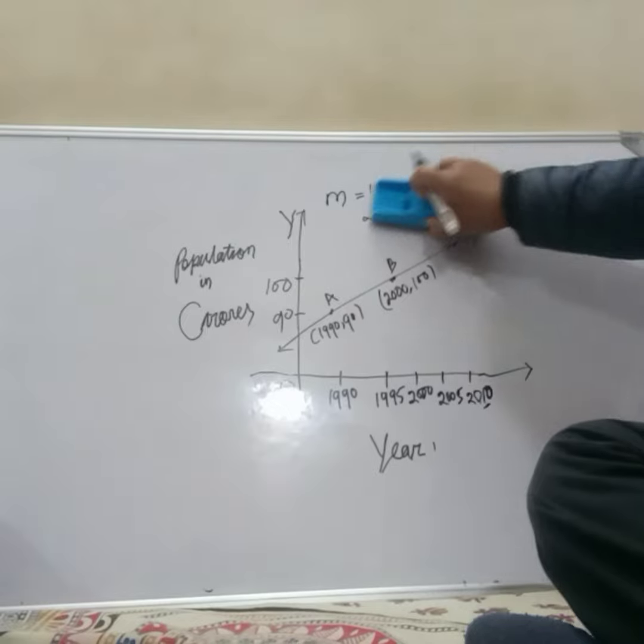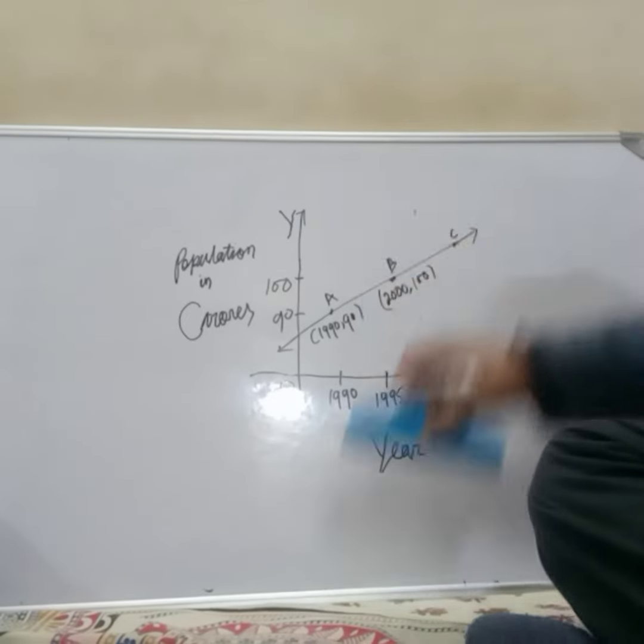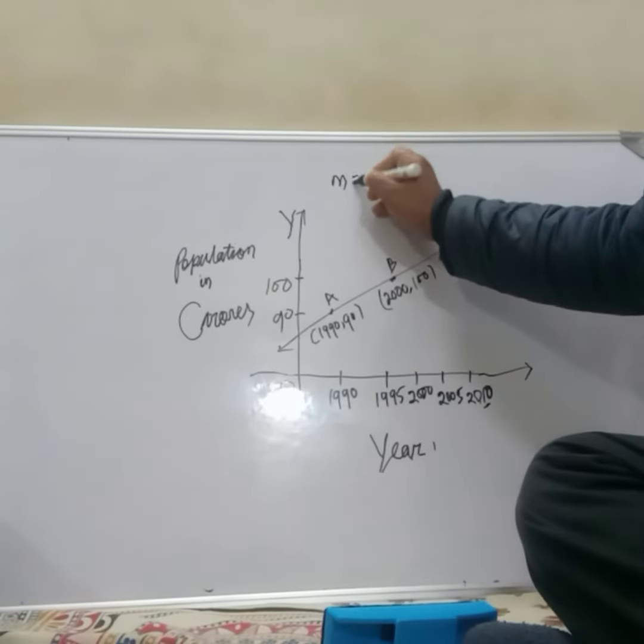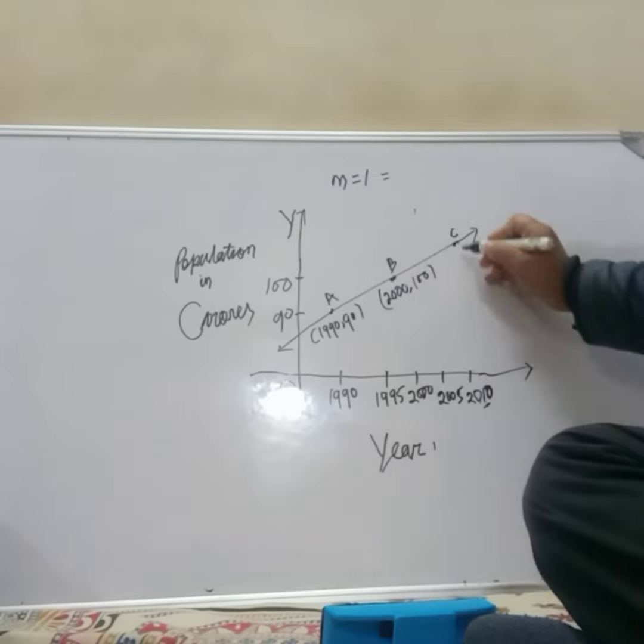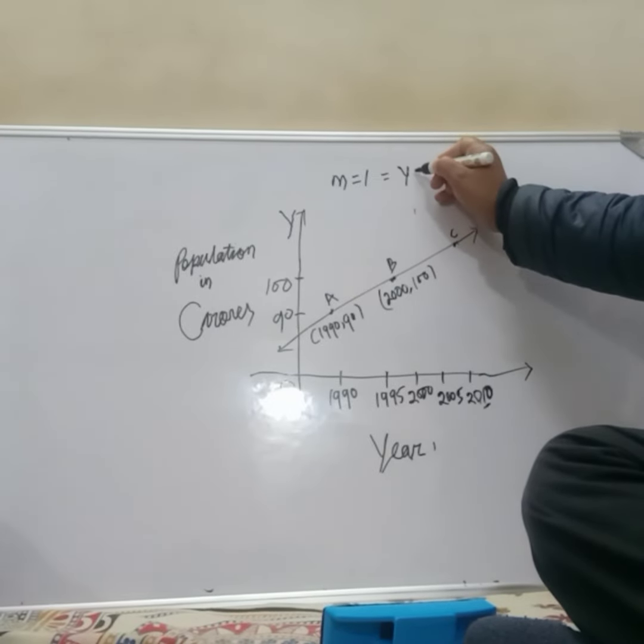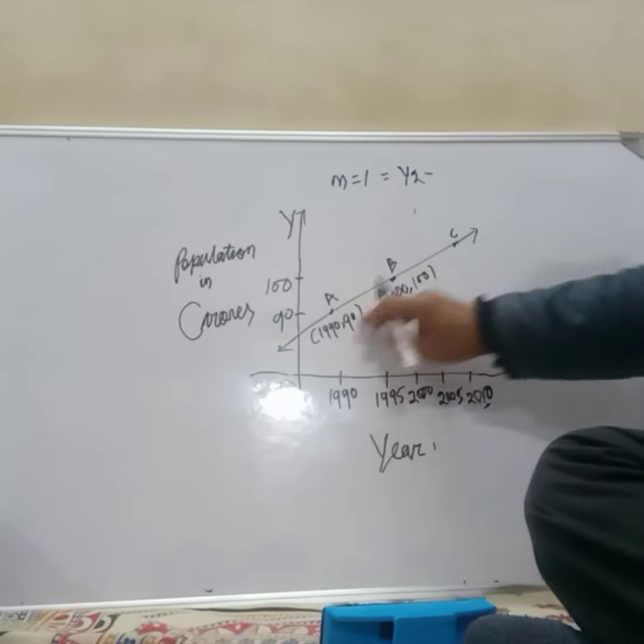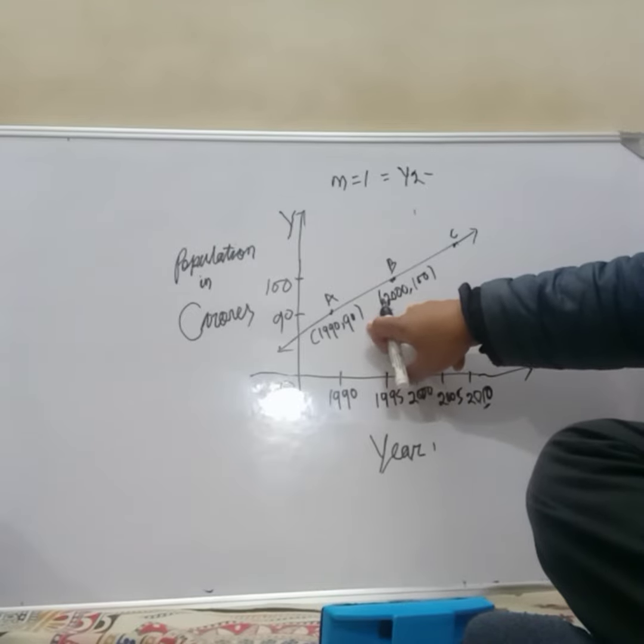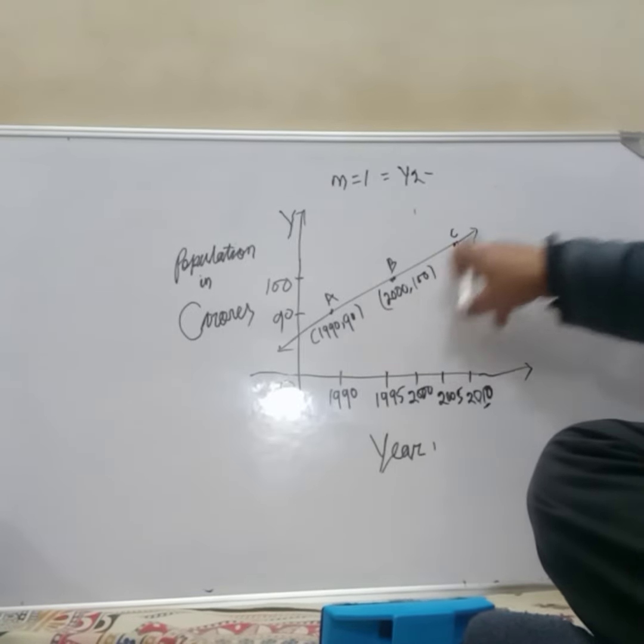You will get the y2 value. Already m you know is 1. M equal to 1 equals y2 minus any one, here you can choose. For calculating this y, I am taking at point B, so it will be y2 minus 100.